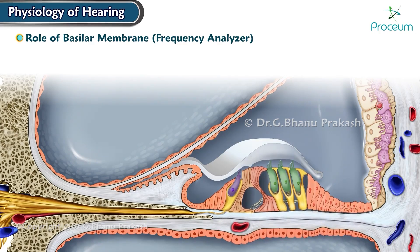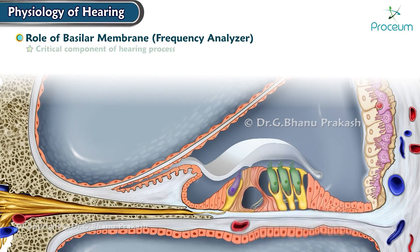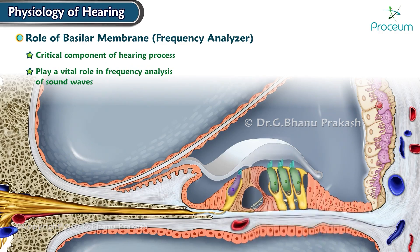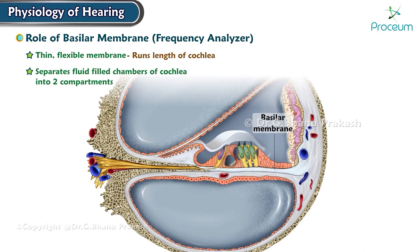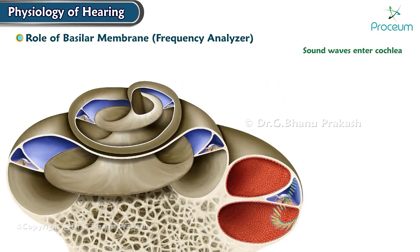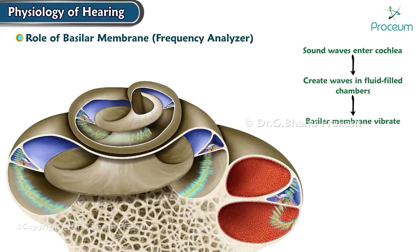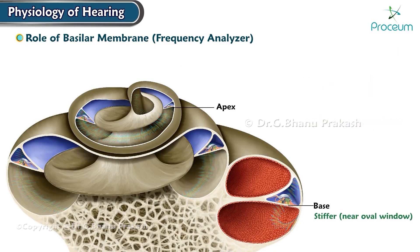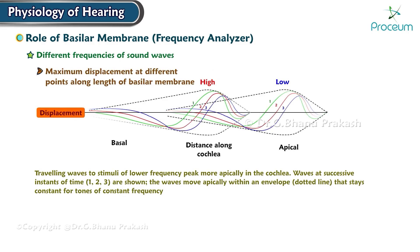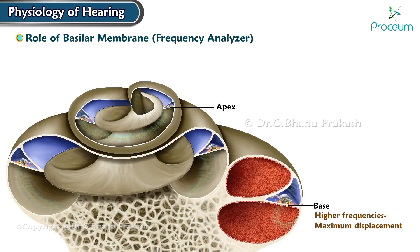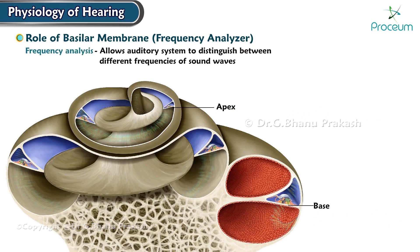The basilar membrane is a critical component of the hearing process, playing a vital role in frequency analysis of sound waves. It is a thin, flexible membrane that runs the length of the cochlea and separates the fluid-filled chambers into two compartments. The basilar membrane is stiffer at the base near the oval window and becomes more thin and flexible toward the apex. As a result, different frequencies cause maximum displacement at different points: higher frequencies cause maximum displacement near the base, and lower frequencies near the apex. This frequency analysis allows the auditory system to distinguish between different frequencies and identify the pitch of sound.